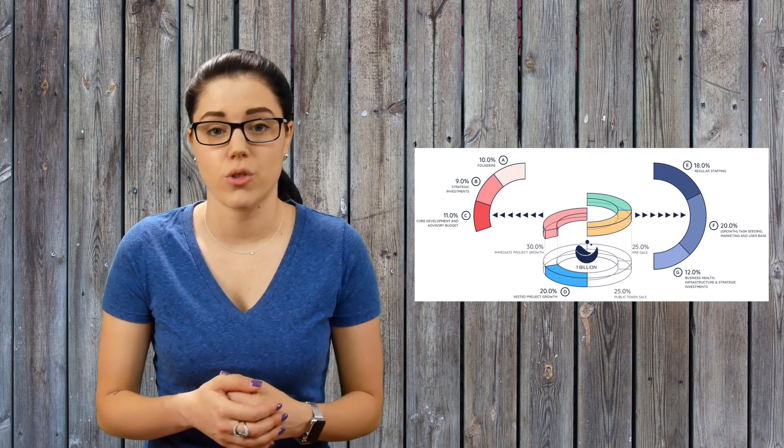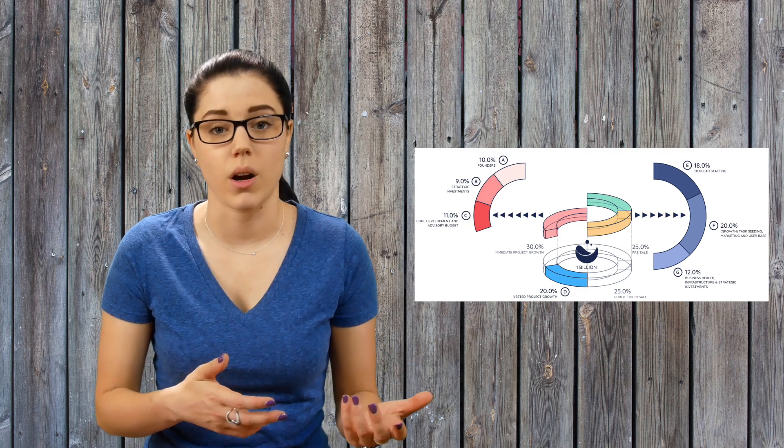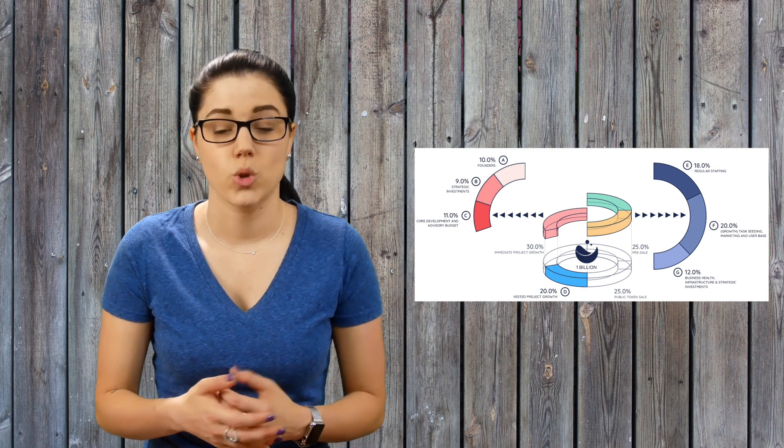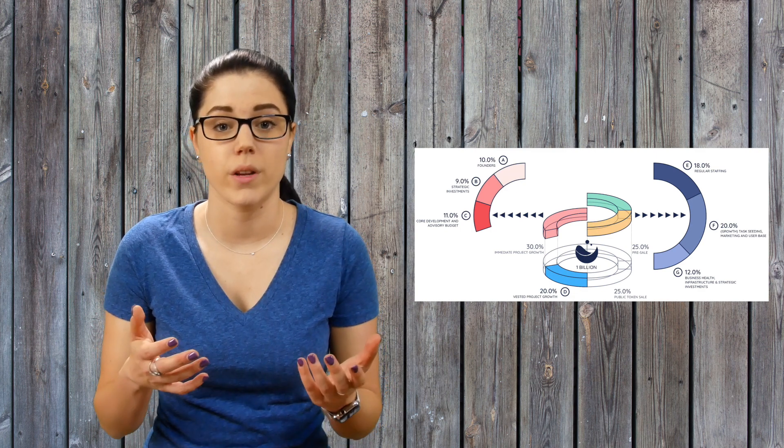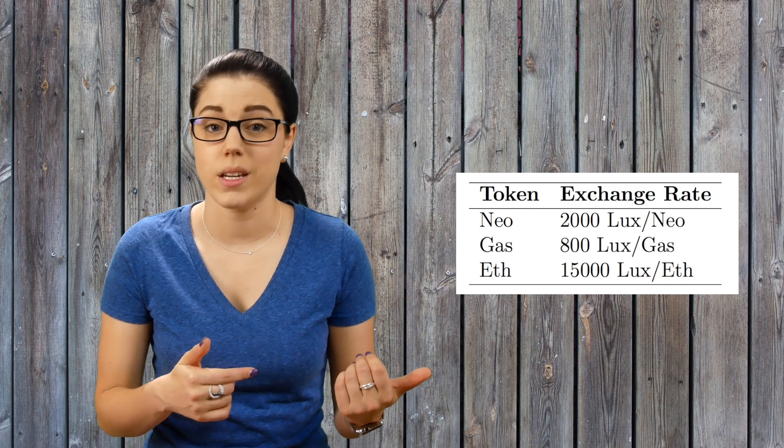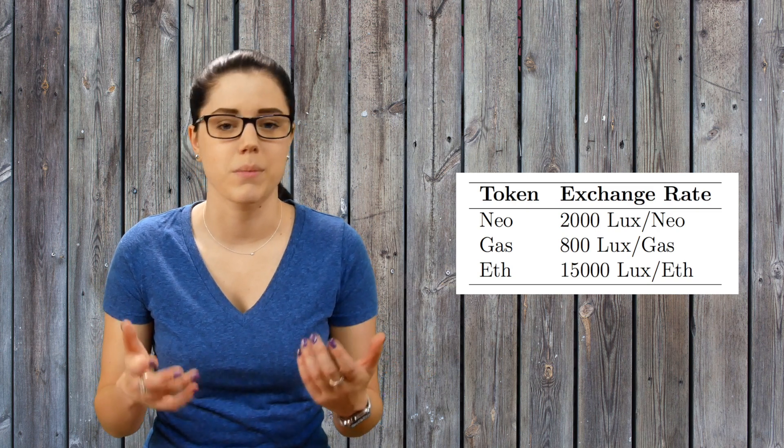20% toward the vested project growth. This allocation will be locked in a smart contract for 24 months and will be used to accelerate new project initiatives. 25% for the pre-sale and the last 25% for the public token sale. The exchange rate is 1 NEO for 2,000 LUX tokens or 1 ETH for 15,000 LUX tokens. The pre-sale finished last week and they're starting their public sale I think sometime this month.